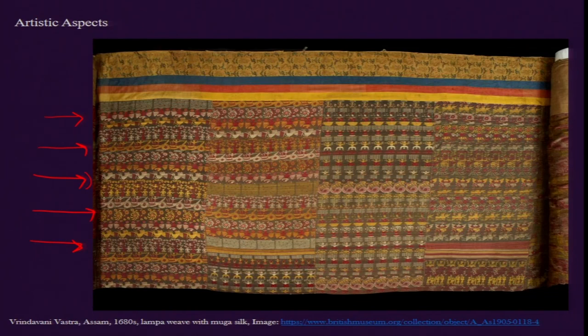By using motifs from the Bhagavata Purana, the weavers attest their close alliance with Vaishnavism — not just any form of Vaishnavism, but the Bhakti movement in which the life stories and miraculous activities of Krishna are prioritized. Not too many woven fabrics have figurative narrative motifs, and Vrindavanivastra remains one of the few textiles in the Indian subcontinent with extensive narrative and figurative motifs.